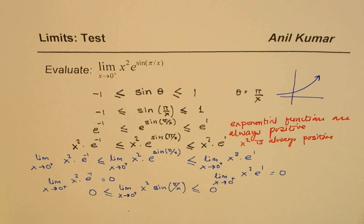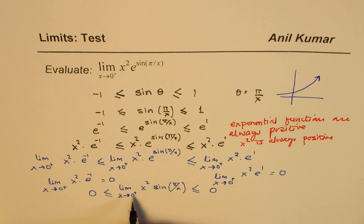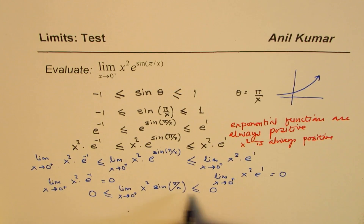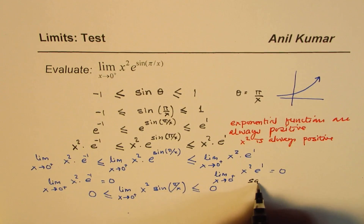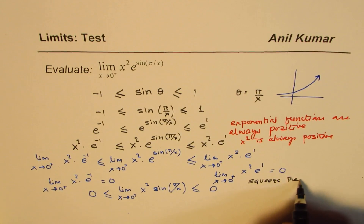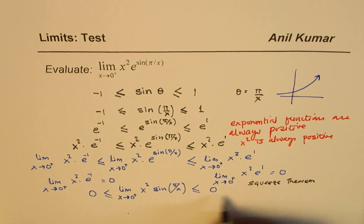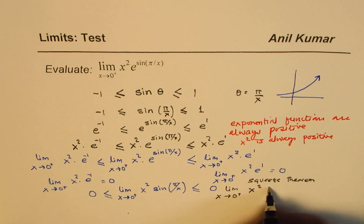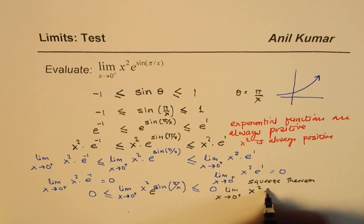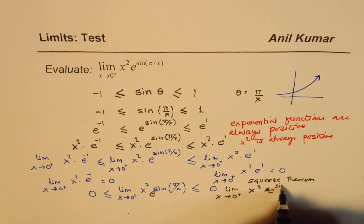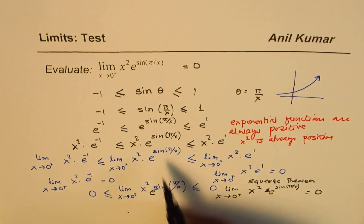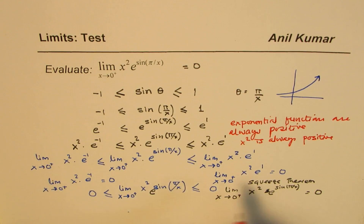From the squeeze theorem, we can say: squeeze theorem states that if the value of the function is squeezed between two values on the left and right side, and if both are equal, then the value of the function is the same as those values. So from squeeze theorem, we conclude that the limit of x squared e to the power of sine pi by x as x approaches 0 plus is equal to 0. The proof is right there, and what we did was apply squeeze theorem.